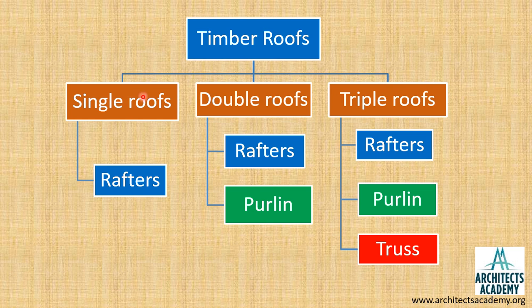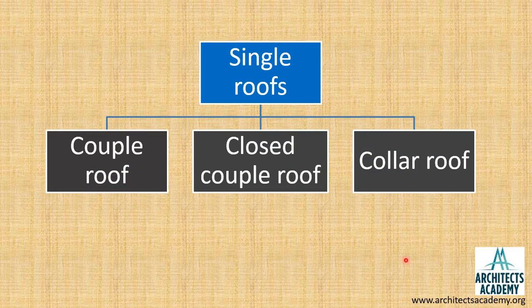Timber roofs are classified into single roofs, double roofs, and triple roofs based on the members used. Single roofs have only rafters, double roofs have rafters and purlins, and triple roofs have rafters, purlin, and truss. Single roofs are classified into couple roof, closed couple roof, and collar roof.